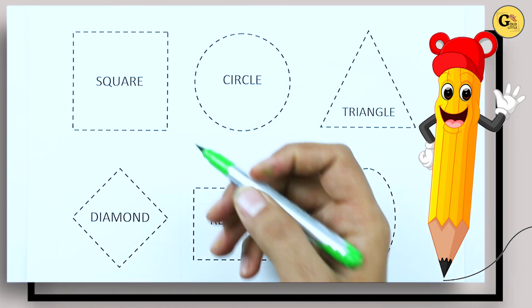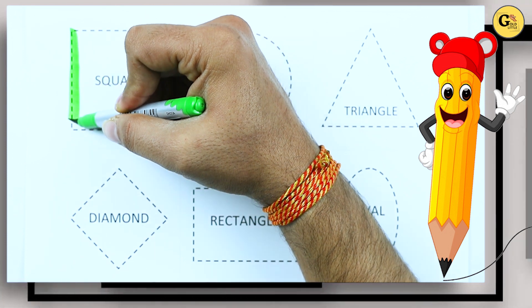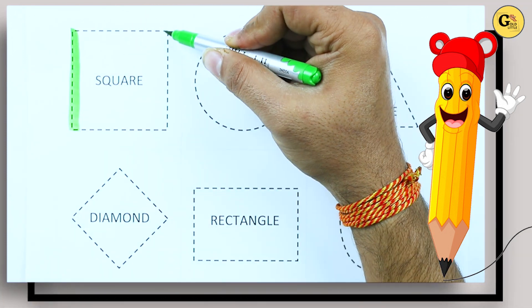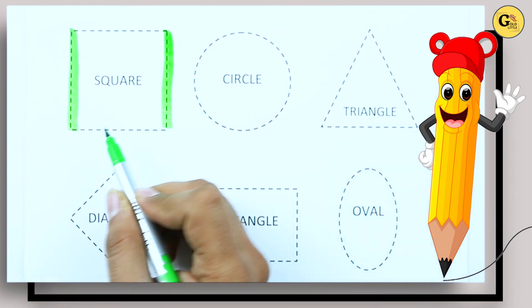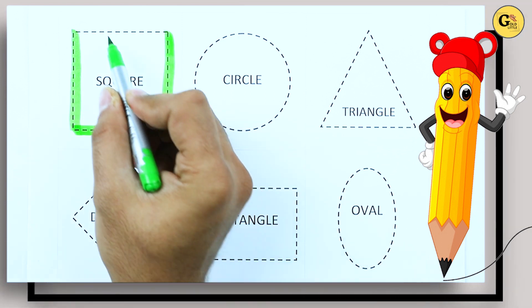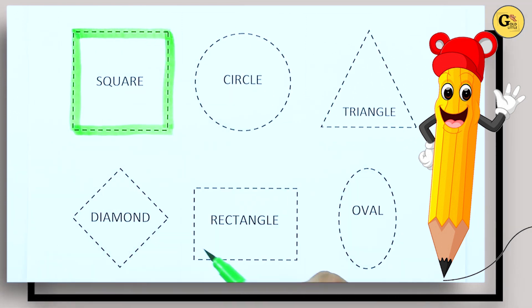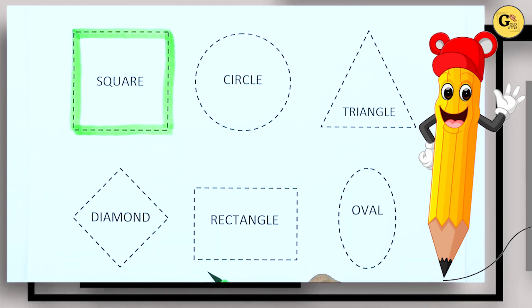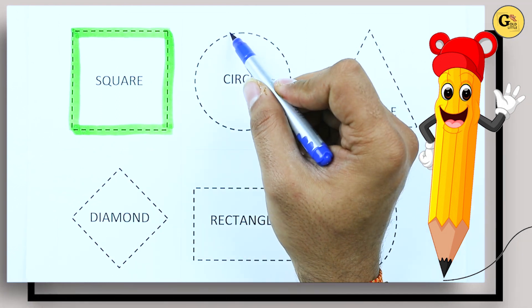It's a square. One line, two line, three line, four line, two slipping line, two standing line. It's called square with green color.